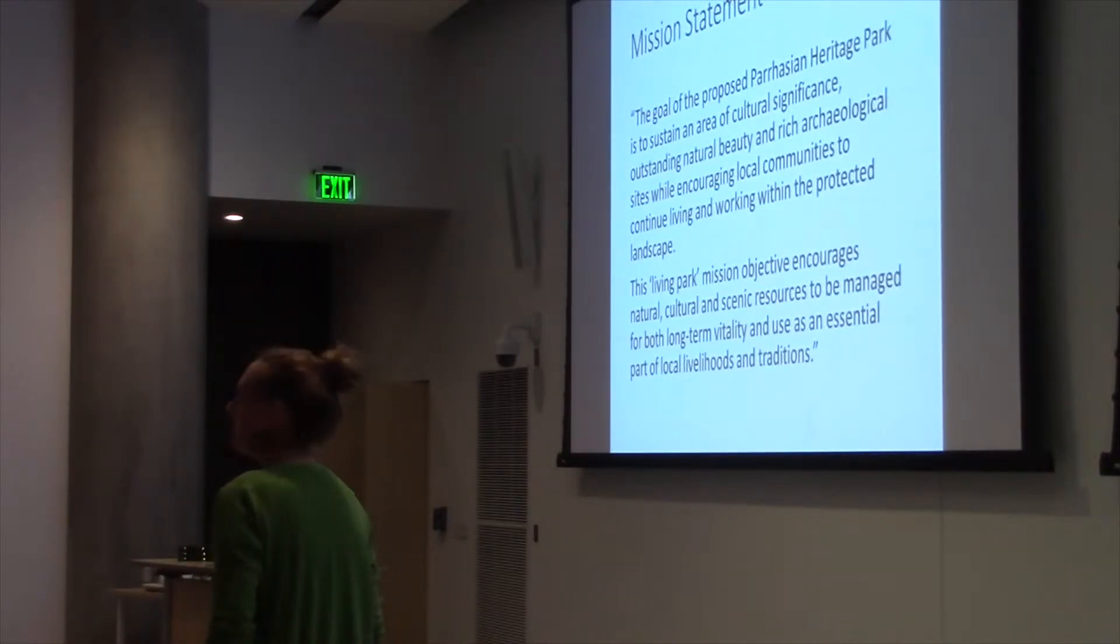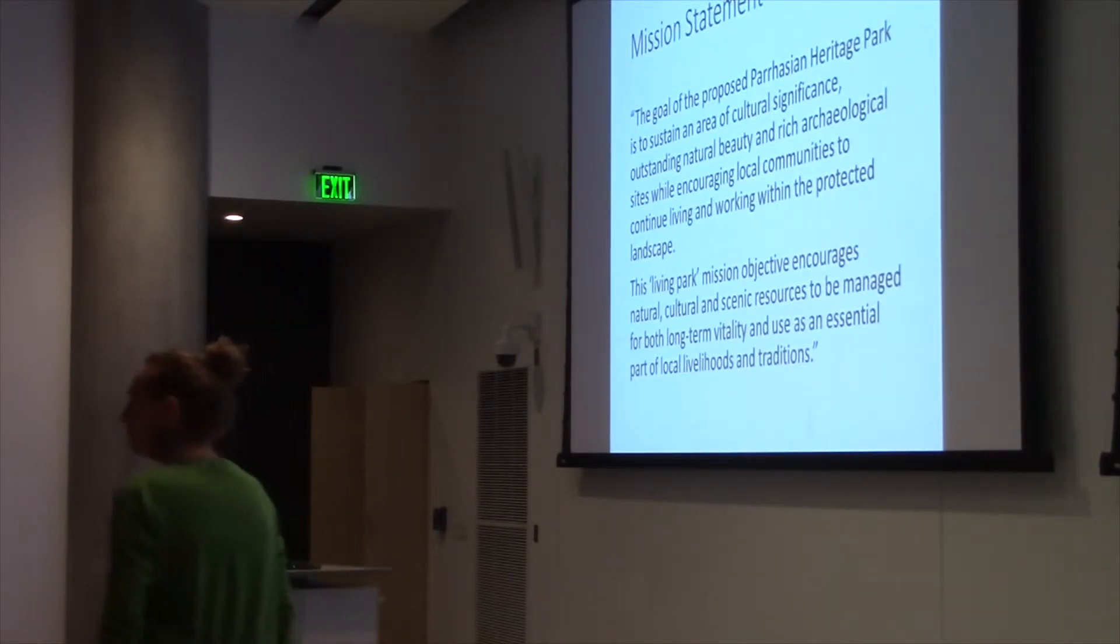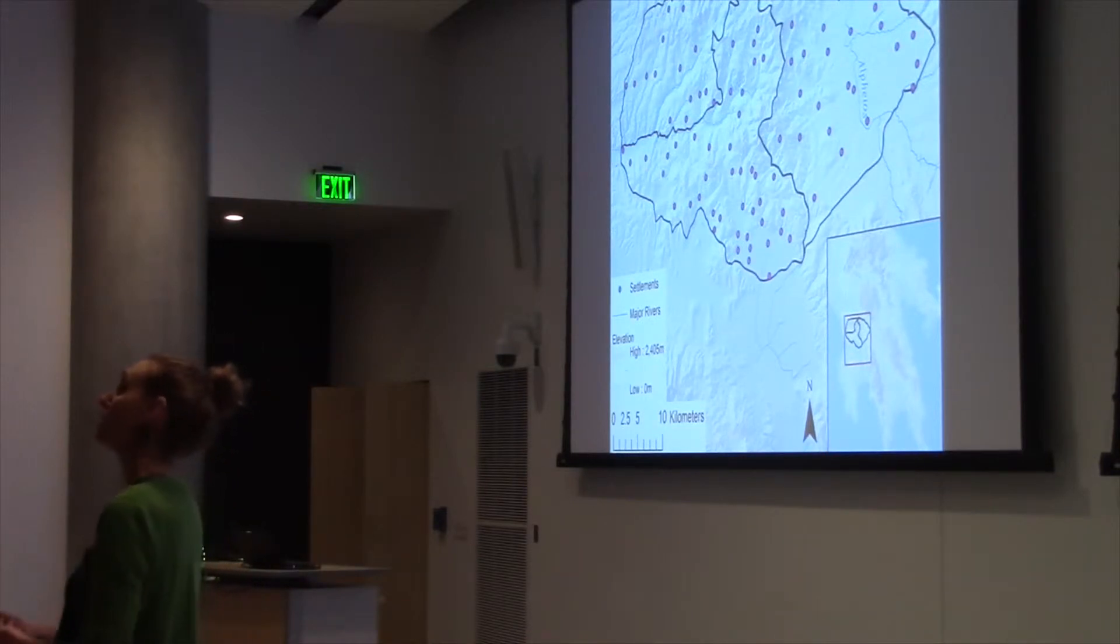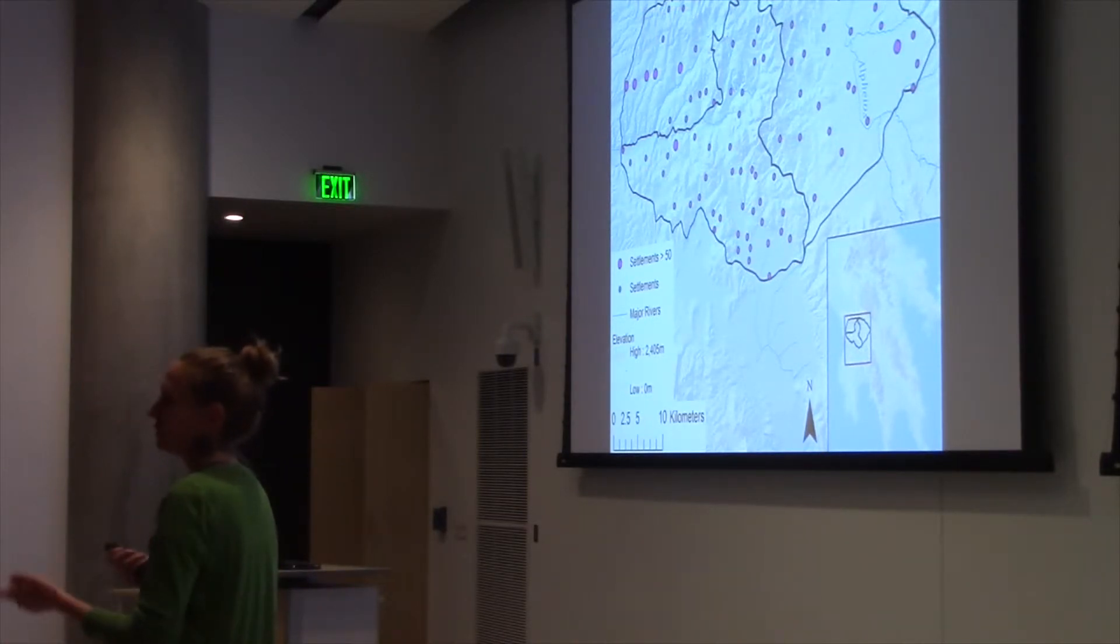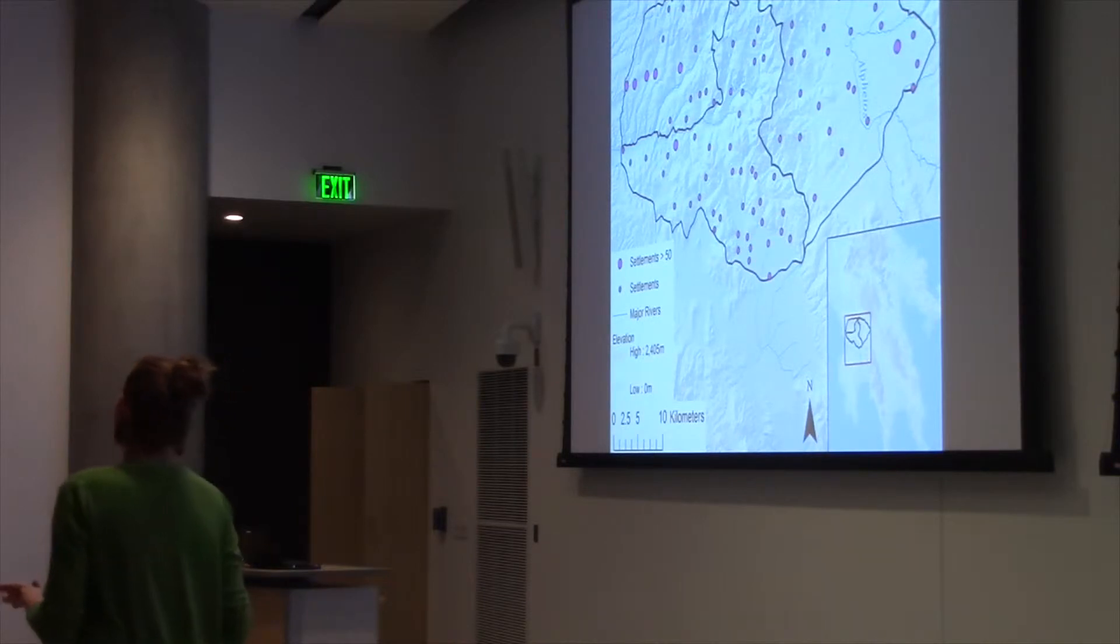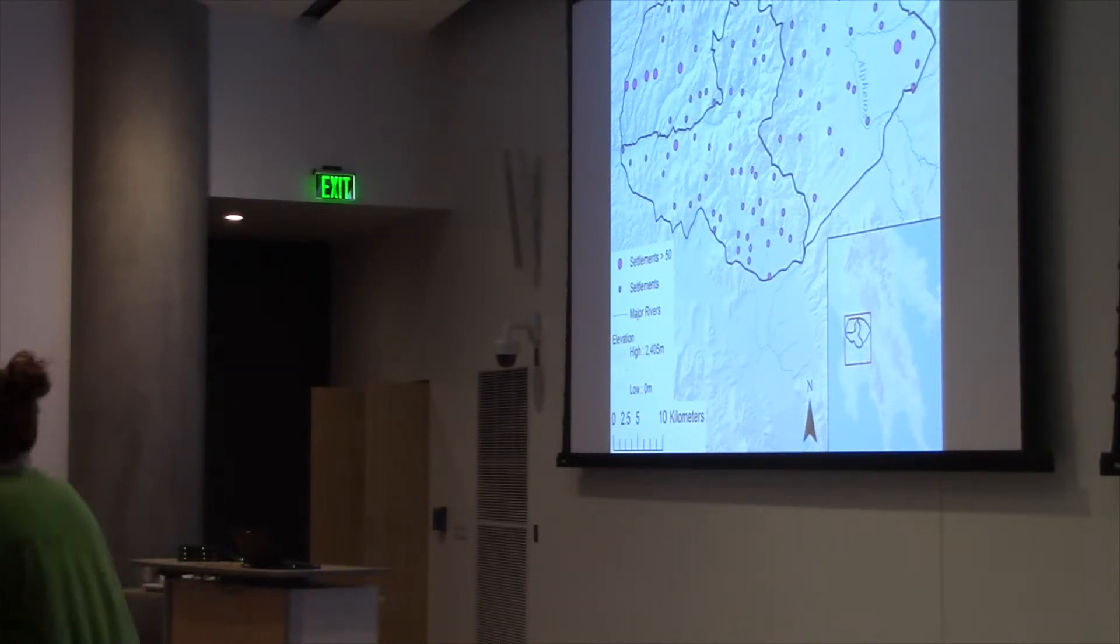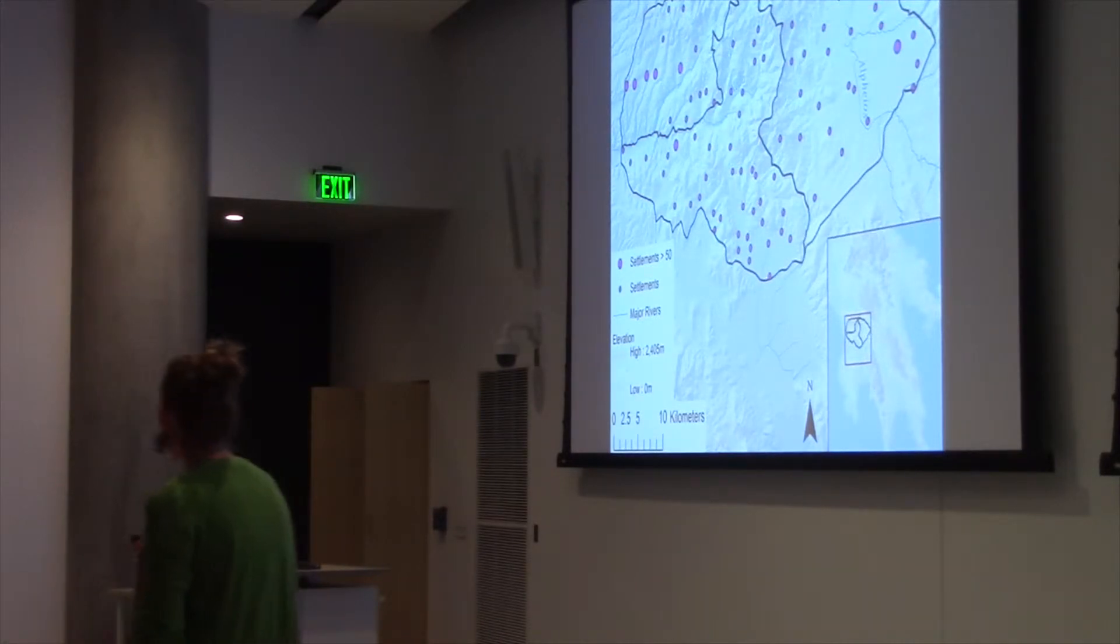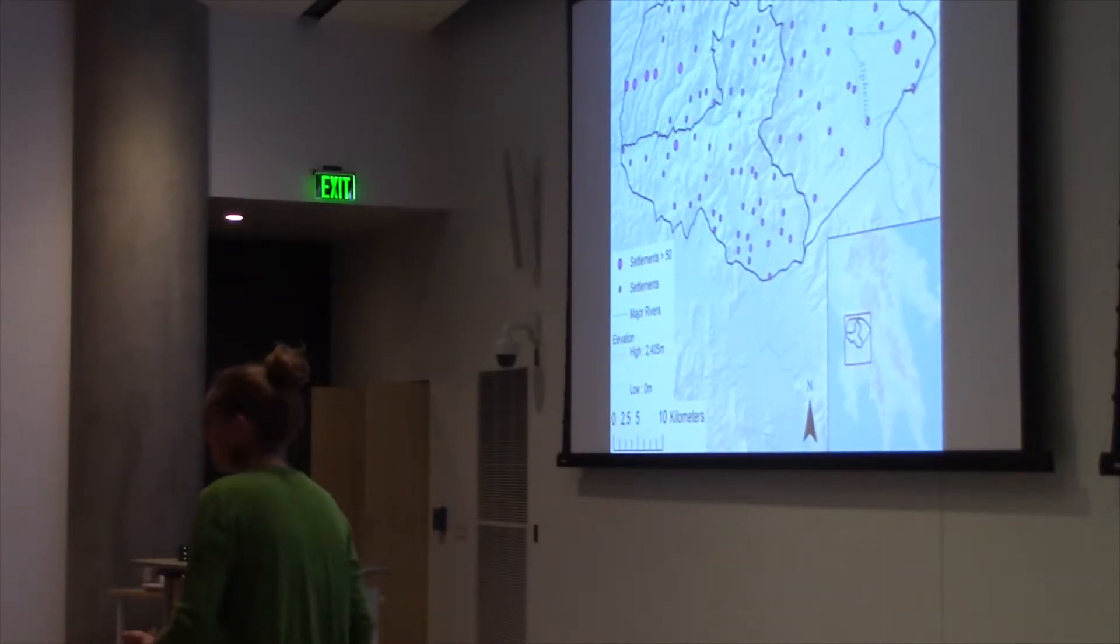I think we're all probably pretty familiar with the economic situation in Greece. Just to kind of give you an example of how that's hitting the Parasian Heritage Park. Here are all 92 of the settlement areas or the settlements within the Parasian Heritage Park. Only seven of them have a year-long residence of over 50 people. So the area is becoming depopulated. Now there could be several reasons why that is, but we'd like to see that stop. It's a wonderful cultural area. It has a lot of beautiful traditions.